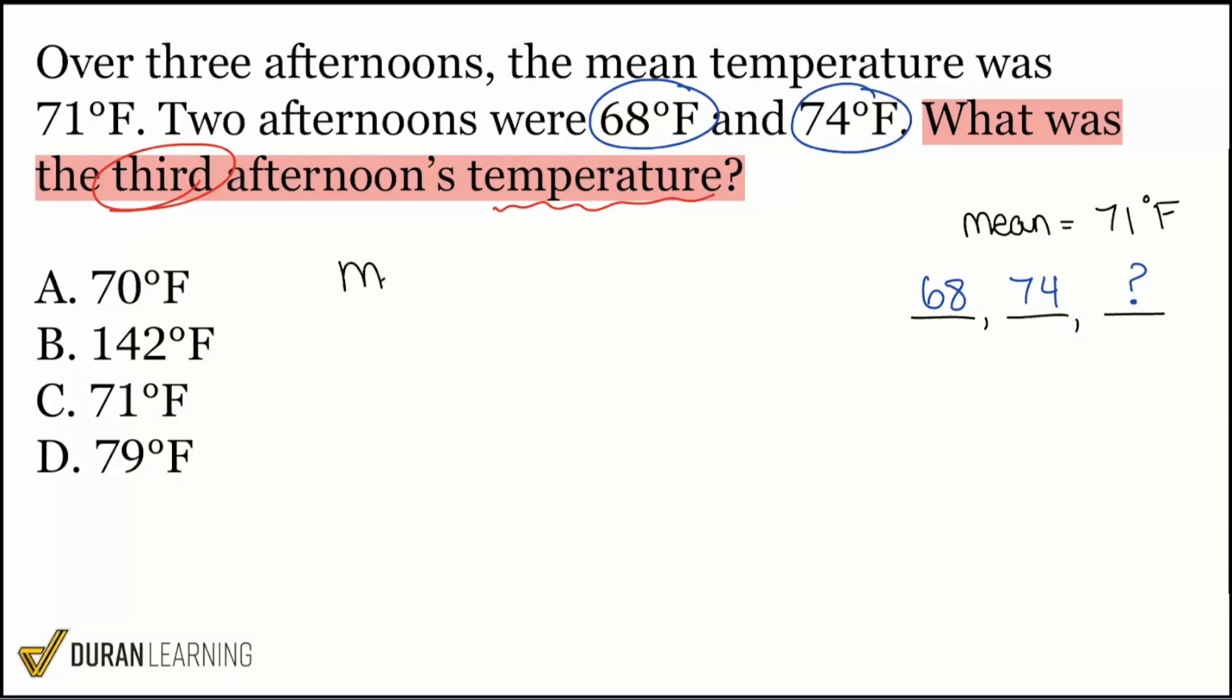Mean equals our total divided by the number of numbers. And let's fill everything in. The mean we're given that, that's going to be 71. And the number of numbers that we're given, that's going to be three. One, two, three afternoons. So with that, boom, right there.